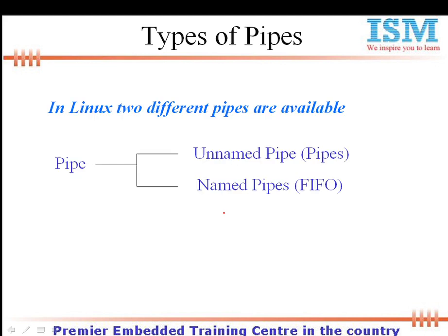Linux has support for two different types of pipes: unnamed pipes and named pipes. As the name states, named pipes are pipes assigned with some name, while unnamed pipes are pipes with no name. Unnamed pipes are simply referred to as pipes, whereas named pipes are referred to as FIFOs.